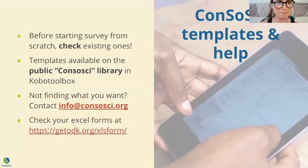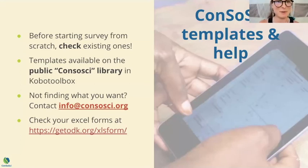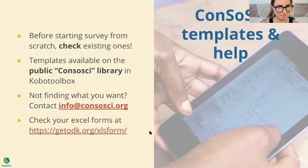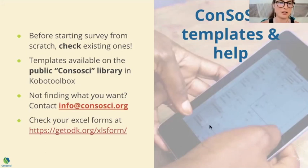A few tips: before you start a survey from scratch, it's good practice to check if a similar survey already exists. There are templates available on the public Kobo Toolbox library, which will be filled up progressively over time. If you can't find what you want, you can contact the group and inquire. And when you work in Excel, you will make mistakes — you should always check your forms using the link provided at the bottom of the slide. It will tell you where your form has errors and what they are, and then you can correct them in Excel and re-upload to the website to check again until everything is good.